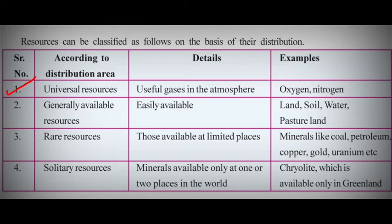Universal resources are the resources which are found everywhere in this universe. Useful gases in the atmosphere such as oxygen, nitrogen, etc. are universal resources. The resources which are available easily are termed as generally available resources. For example, land, soil, water, and pasture land are easily available to all, so they are the resources which are generally available.